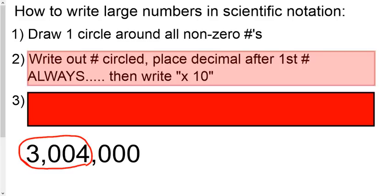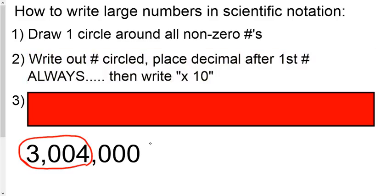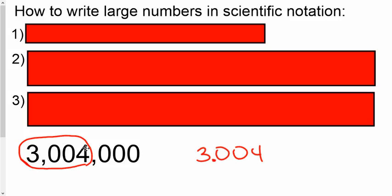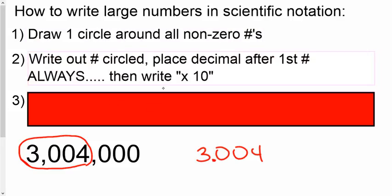The next thing that you would do is you would write out your circled numbers. So, I'm going to write that out, 3, 0, 0, 4. You're only writing what would be inside your circle. Place the decimal after the first number always. There's a rule in scientific notation that your stem number, these numbers right here in the front before you get to times 10, it always has to be bigger than 1 or at least 1, but it can't be 10. Then write times 10.